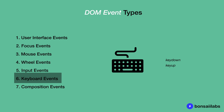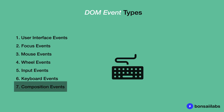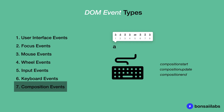The keyboard events are device-dependent events — that is, they rely on the capabilities of the input devices and how they are mapped in the operating system. The events included in this category are key up and key down. Composition events provide means for inputting text in an alternate manner, to allow the use of characters that might not be commonly available on the keyboard. The events in this category are composition start, composition update, and composition end.